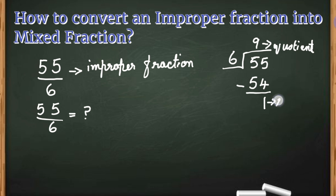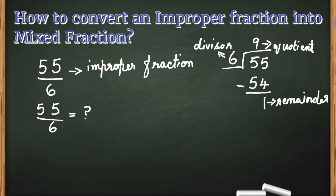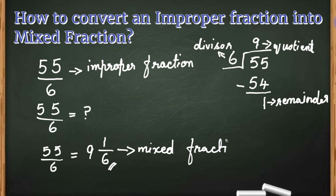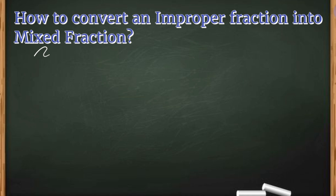And 1 as a remainder. Here 6 is the divisor and 55 is the dividend. We need these three terms: quotient, remainder, and divisor. By using these three terms we will write the mixed fraction. So 55 divided by 6 is equal to 9 and 1 by 6 as a mixed fraction. Here 9 is the quotient written as the whole number, the remainder is written as the numerator, and the divisor is written as the denominator.